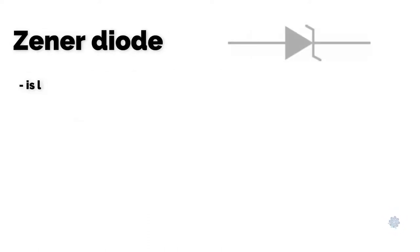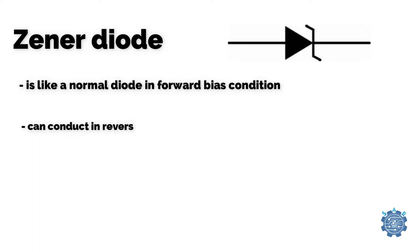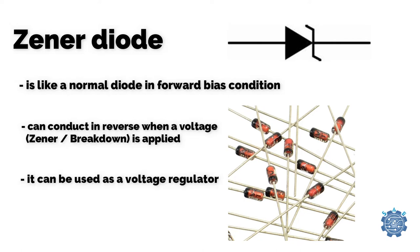Zener diode is like a normal diode except in the reverse bias condition. This diode can conduct also in reverse when a voltage is applied that is equal to the breakdown voltage, or Zener breakdown voltage. It can be used as a voltage regulator.